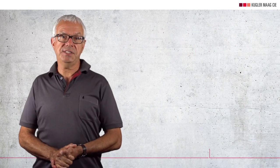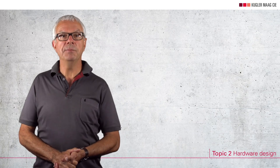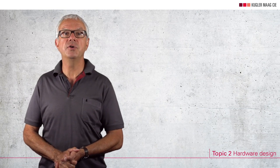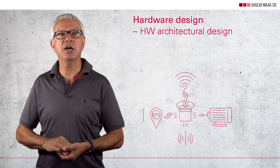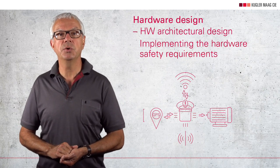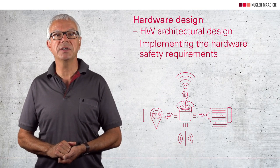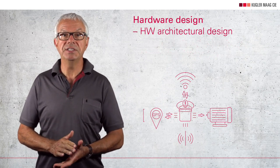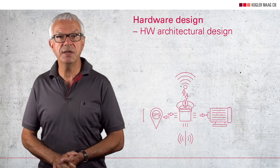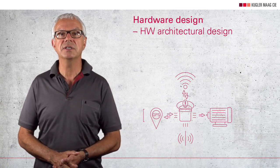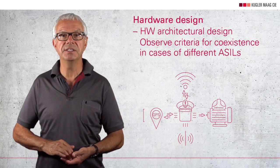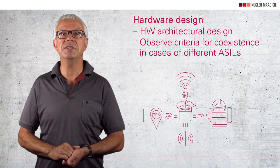We move on to the next phase in which requirements are implemented in a concrete hardware design. First, there is the level of hardware architectural design. From a safety perspective, hardware should be designed so that it implements the required safety requirements placed on hardware. This design is not just to deliver functional safety, but also has to safeguard the actual function of hardware. Safety mechanisms thus become an integral part of the design.